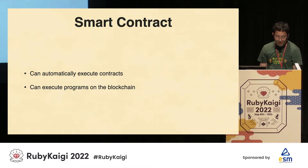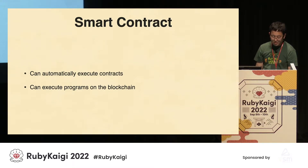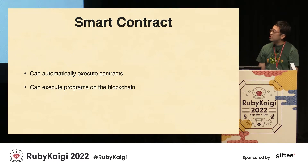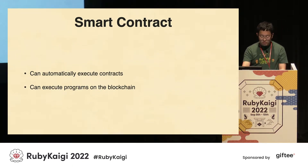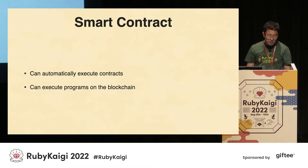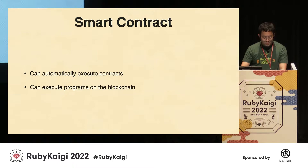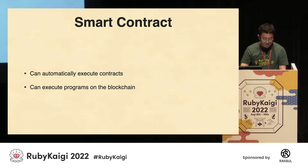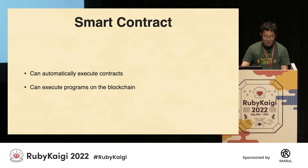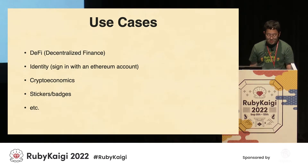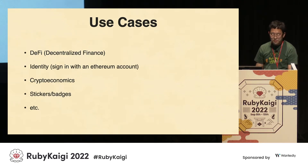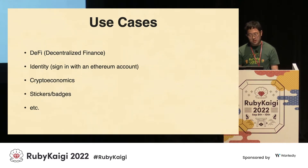Finally, I will talk about smart contracts — how to interact with smart contracts. Smart contracts can run programs on the blockchain. It is a mechanism that allows for automatic execution of contracts. There are many use cases for smart contracts. Here is a list of ideas shown by Vitalik.